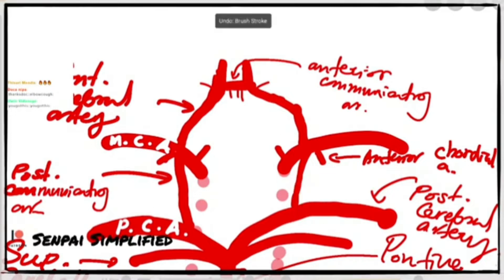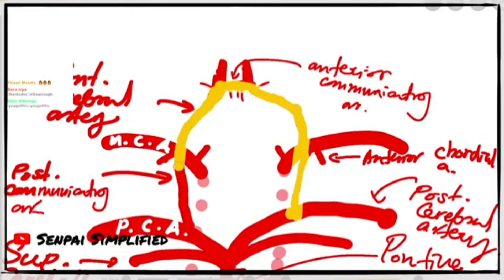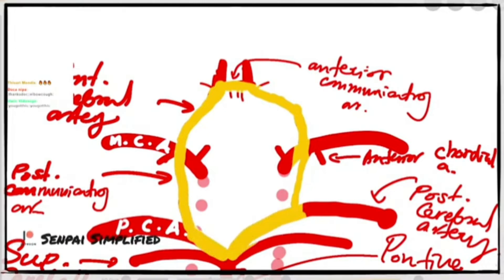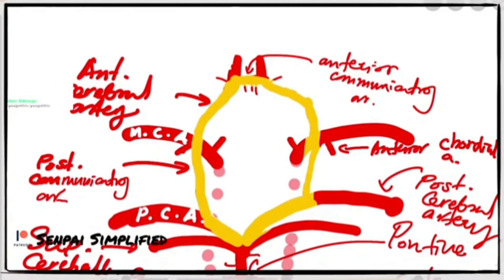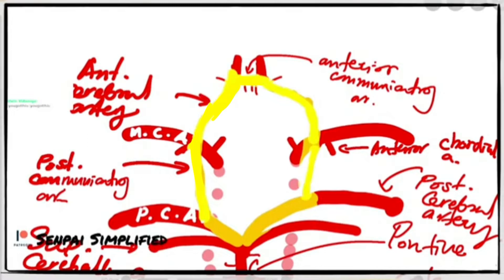What I'm coloring right now makes up the circle of Willis. Now that you know each branch and each artery, if you get a question like 'what are the arteries that make up the circle of Willis,' now you know the answer. The components are: the posterior communicating artery, the anterior cerebral artery — at least the first part of it — the anterior communicating artery, and the posterior cerebral artery. That makes up the circle of Willis.